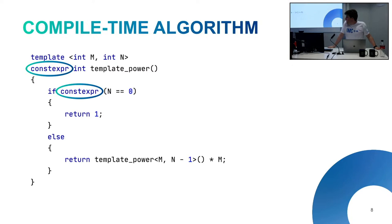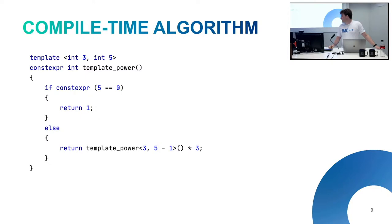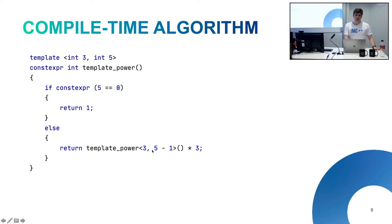How does this end up having no time complexity and just being instant? When we do this, we just substitute in what we called it with. Suppose we call template power of 3, 5 — the compiler would go through and say put a 3 where N was, put a 5 where M was, and figure out what happens. If constexpr 5 equals 0 — constexpr means something that can be evaluated at compile time — then return 1. Otherwise return template power of 3, 4, and so on down to 3, 0, and we just say that's 1. Then it goes back up the stack.